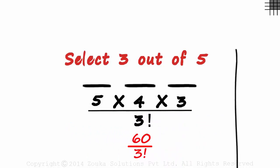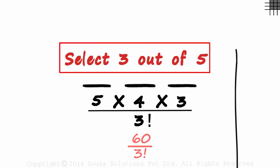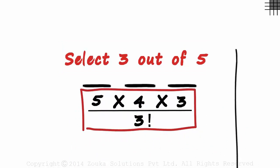So 60 over 3 factorial is the number of ways in which we can select three objects from five different ones. We have seen this logical approach in the previous sessions.